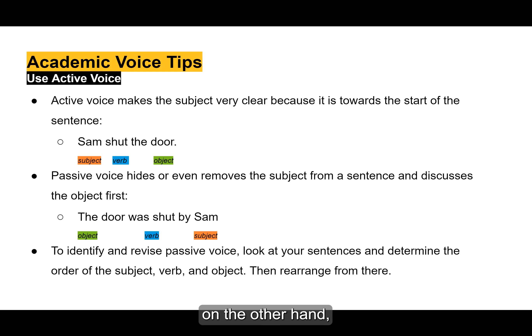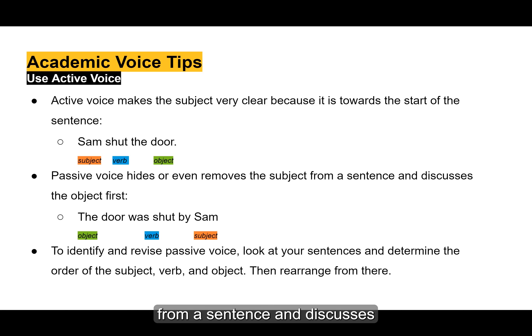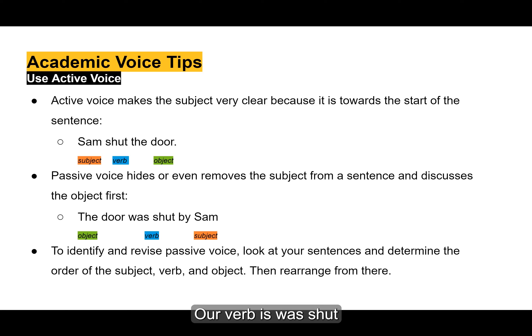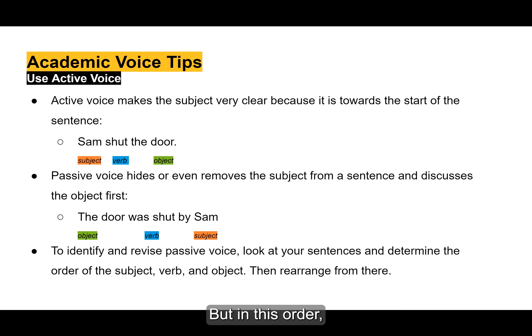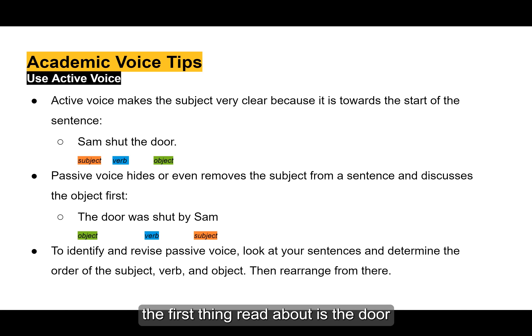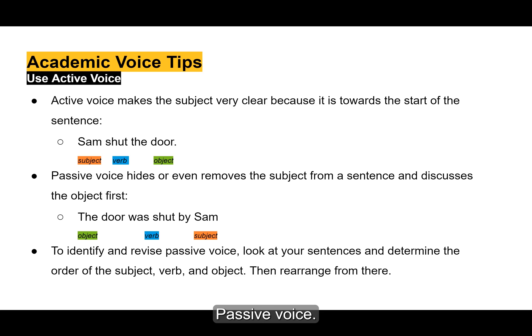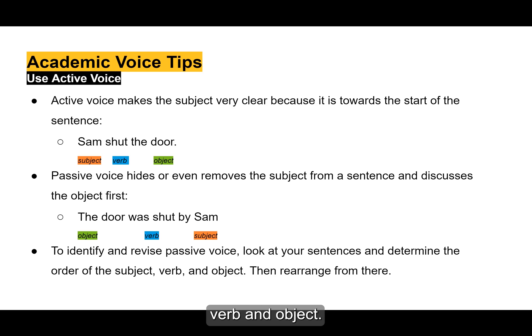Passive voice, on the other hand, hides or even removes the subject from a sentence and discusses the object first. For example, 'the door was shut by Sam.' Our object is the door, our verb is 'was shut,' and our subject is Sam. In this order, the first thing read about is the door, which prioritizes the object over the subject. To identify and revise passive voice, look at your sentence and determine the order of the subject, verb, and object, then rearrange from there.